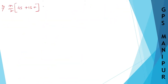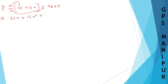So N divided by 2 into 45 plus 15N is equal to 4860. Multiplying both sides by 2: 45N plus 15N squared is equal to 9720.